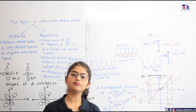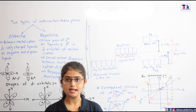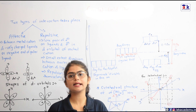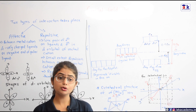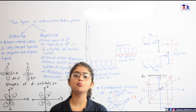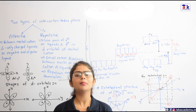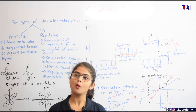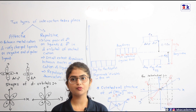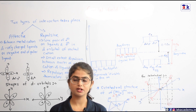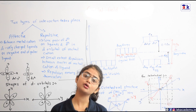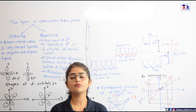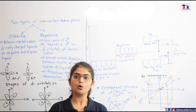The need for Crystal Field Theory lies in the shortcomings of VBT. VBT is very useful in explaining the bonding in coordination complexes, but the theory does not talk about the nature of ligands, electronic spectra, why some complexes are high spin and some are low spin, the effect of temperature on magnetic properties, or the stability of coordination complexes.